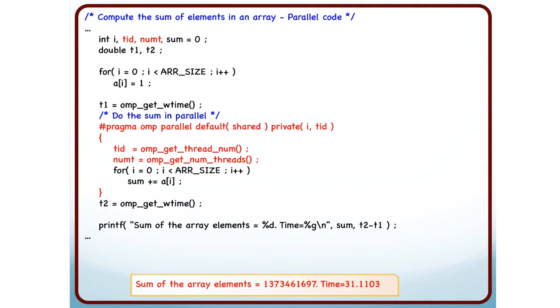I run this code and this is what I see. Well, I had a billion entries and this is 1.3 billion. So, I expected the sum to be 1 billion.